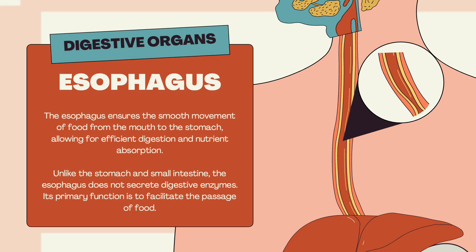The esophagus ensures the smooth movement of food from the mouth to the stomach, allowing for efficient digestion and nutrient absorption. Unlike the stomach and small intestine, the esophagus does not secrete digestive enzymes. Its primary function is to facilitate the passage of food.